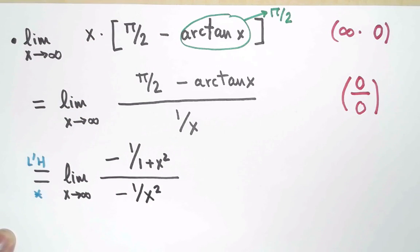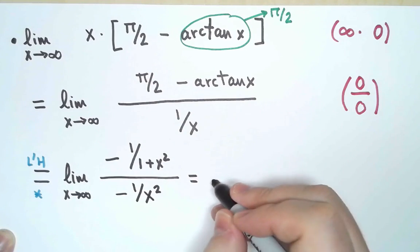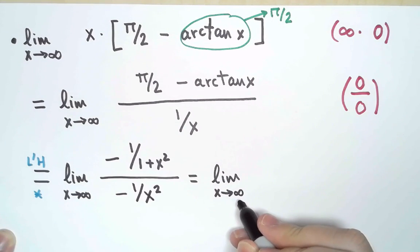Great! This has simplified a lot. The arctan is gone. Now, let me use a bit of algebra, get rid of the minus signs, and rearrange the fractions.